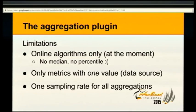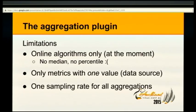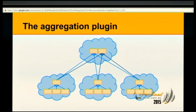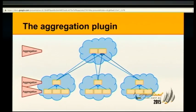The limitation of the aggregation plugin is that it has only online algorithms — it doesn't have a variable amount of state per aggregate. It only has quite simple things such as minimum, maximum, average, and sum. That also means there's no median and no percentile. Aggregation can happen at the client level — you can pre-aggregate stuff at the client if you don't want to expose detailed per-CPU information, but only something like 'I am using 90% of all my CPUs.'